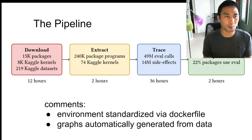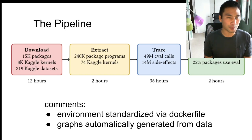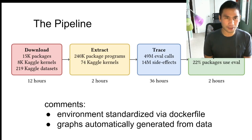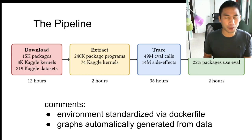The pipeline is fully automated for generating all graphs from data. They download packages, extract and make programs runnable, then run each program. They observed 49 million eval calls with 14 million side effects, taking 36 hours. They found 2.8 million unique eval calls and 22% of packages use eval. Docker ensured a standardized environment, and they parallelized heavily across many computers.